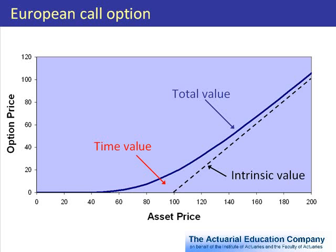At the other end of the graph, for very high asset prices we're very likely to exercise our option, so again the value of waiting and not having to decide isn't that great because we'll probably exercise. At asset prices around 100 the time value is at its greatest, because around these values we're unsure whether we're going to want to exercise or not. So the extra value that the option gives us because we can wait and decide later is at its highest.